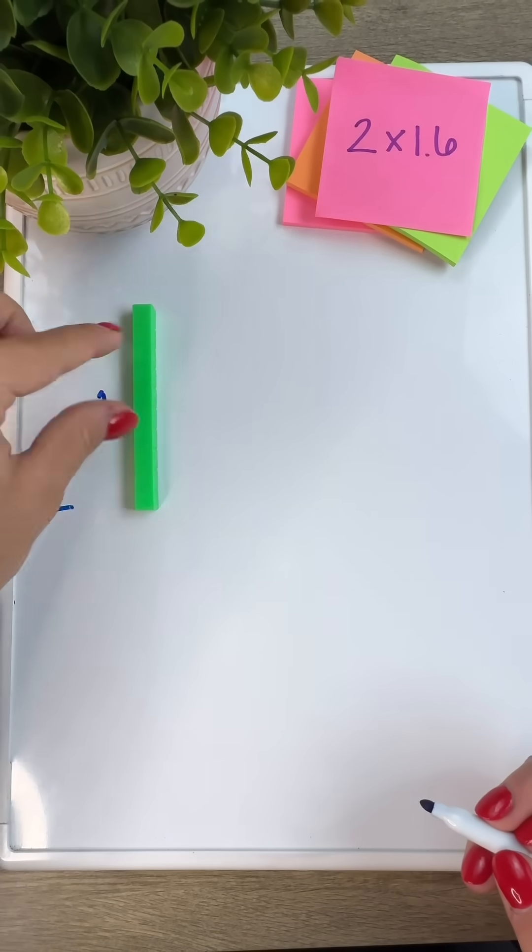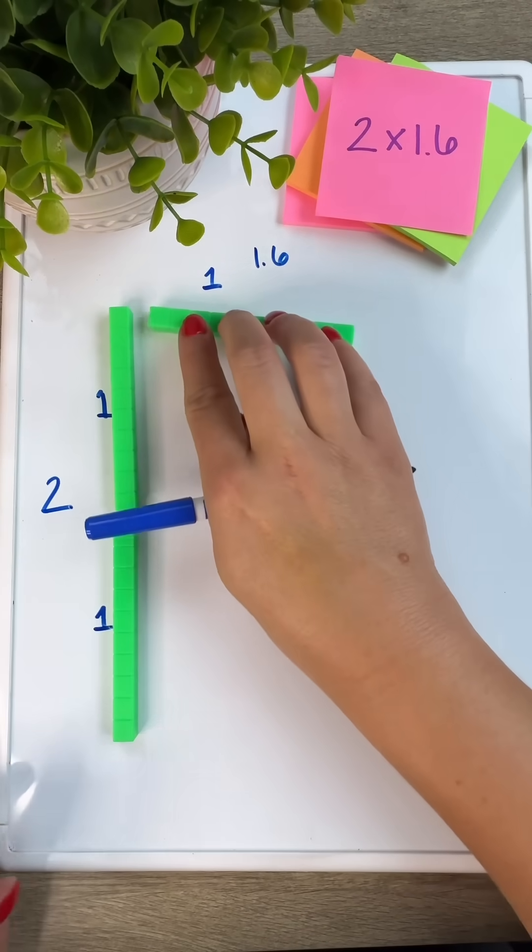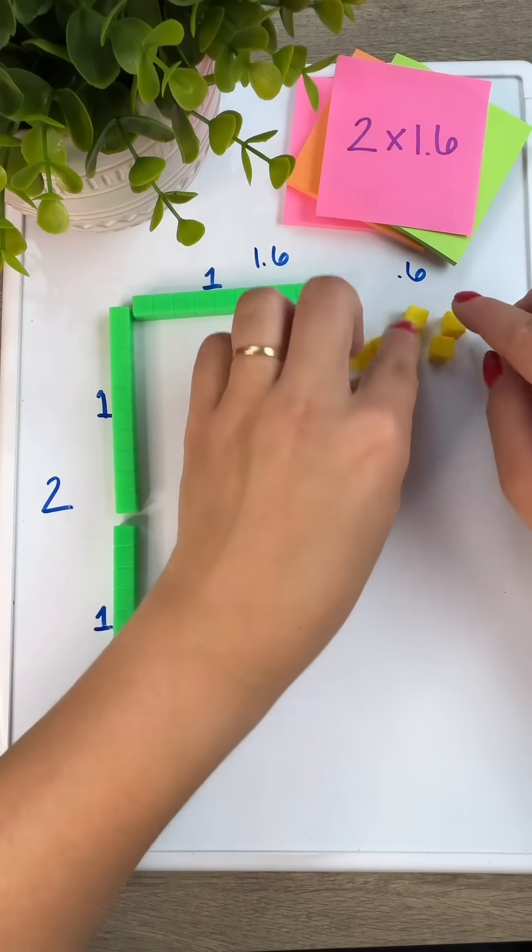Here's an example of finding products of decimals. It's very important for students to understand what value the base 10 blocks are representing, so I'm labeling the value of the rod and the unit cubes.